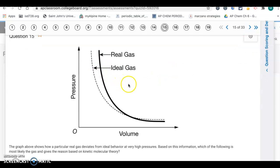Number 15. The graph above shows how a particular real gas deviates from ideal behavior at very high pressures. Based on this information, which of the following is most likely the gas? Deviation from the ideal gas law means either the particles have strong intermolecular forces or larger particles, especially at higher pressures, will deviate more because of the volume part. One assumption is that the particles don't have any volume, but at higher pressures the volume of the particles becomes significant.